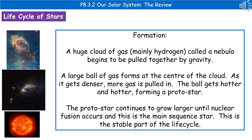The last thing we need to know about is the life cycle of stars. The formation of a star is the same no matter how big they are. We start off with a huge cloud of gas, which is mainly hydrogen, called a nebula, and gravity pulls that together. What we get then is a large ball of gas at the centre of the cloud, and as it gets denser, more gas is pulled in by gravity, and the ball gets hotter and hotter until eventually it's known as a protostar. That protostar continues to grow larger until nuclear fusion occurs, and that means we're in our main sequence star phase — that's the stable part of the life cycle, which is where our sun currently is.